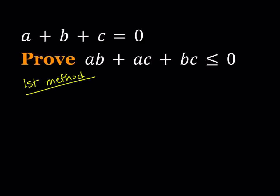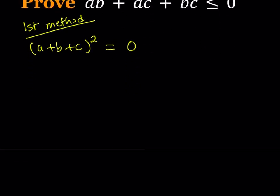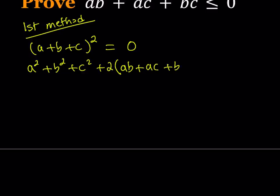My first method basically involves manipulating the given expression, and I'll start by squaring it. Since we know that a plus b plus c is equal to zero, I'm going to square that and its square is also going to equal zero. When you expand this, you're going to get a squared plus b squared plus c squared plus two times the quantity ab plus ac plus bc, and we know that this is equal to zero.